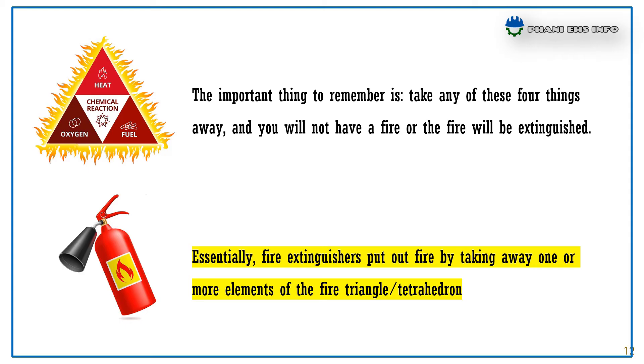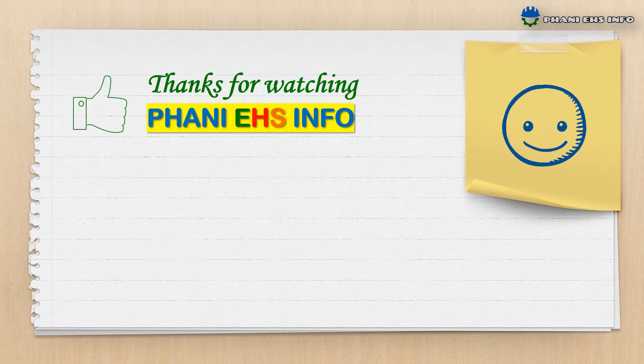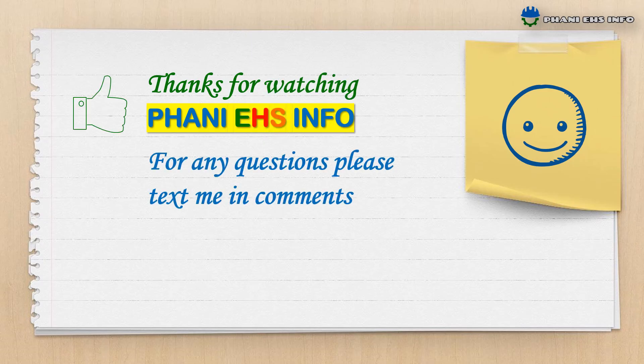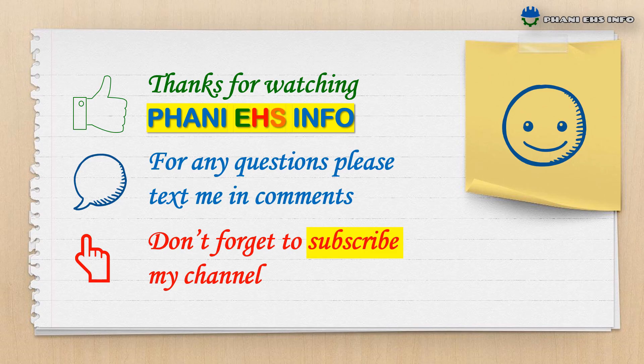Four things must be present at the same time in order to produce fire: enough oxygen to sustain combustion, enough heat to raise the material to its ignition temperature, some sort of fuel or combustible material, and the chemical exothermic reaction that is fire. By adding this fourth element, you get the Fire Tetrahedron.